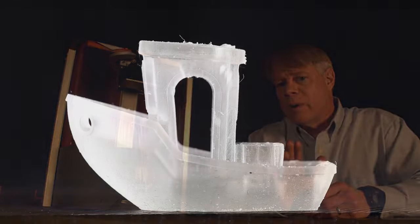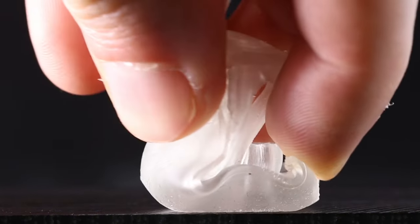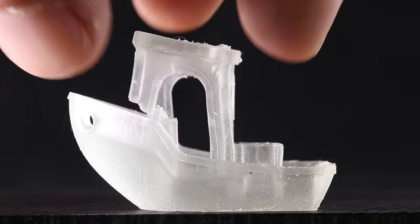For example, here's a tiny boat that we printed using only monomer, no oligomer. If I squeeze it, you see it's no longer rigid, and in fact, it'll even break.